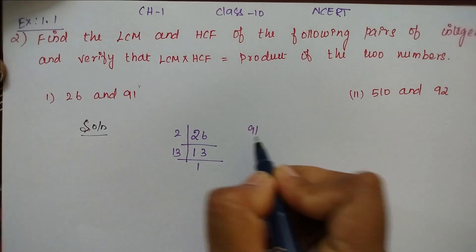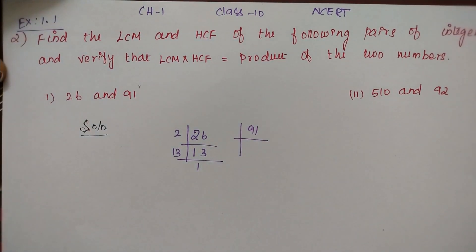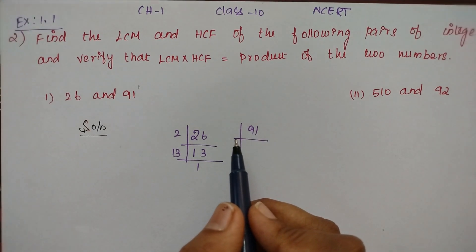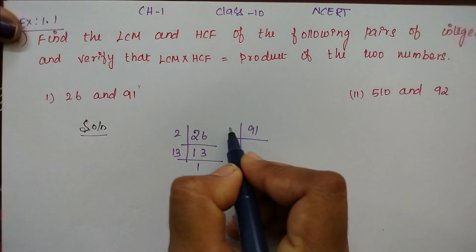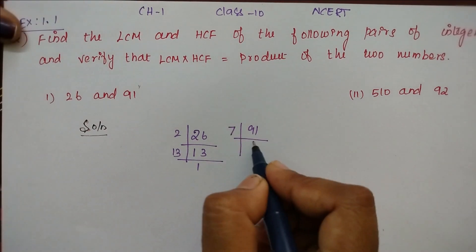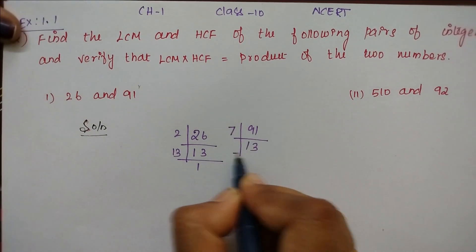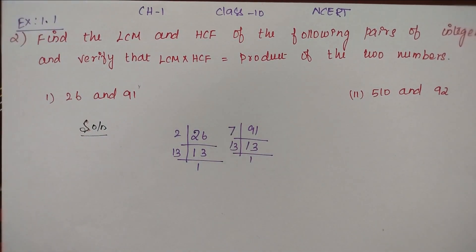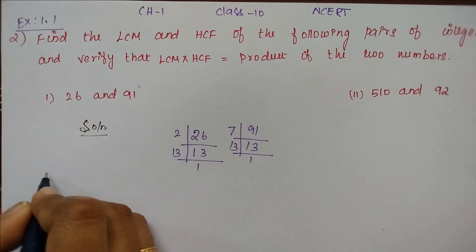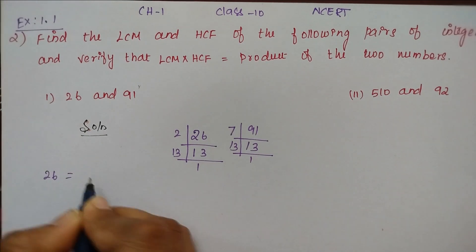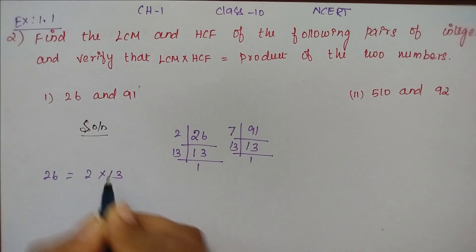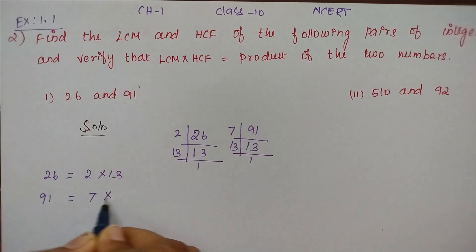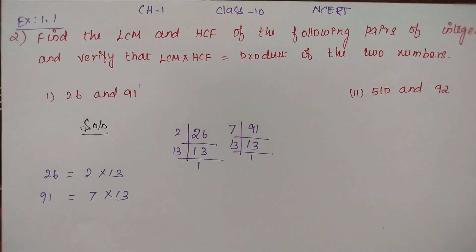Next, we find the prime factors of 91. Dividing 91 by 7 gives 13, and 13 divided by 13 equals 1. So the prime factors of 91 are 7 and 13, that is 7 into 13.